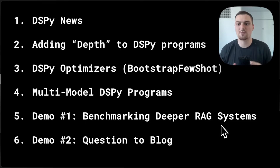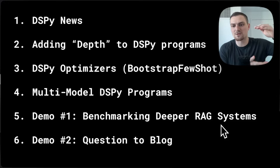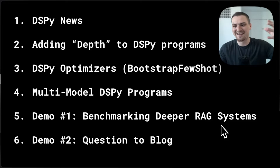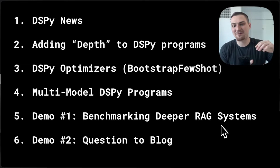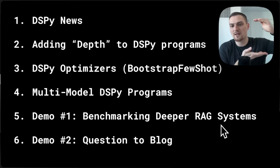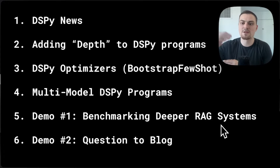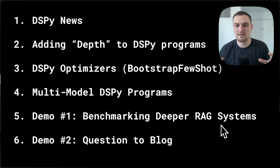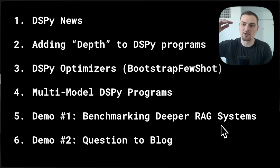With neural networks in PyTorch, we would stack up layers in order to optimize neural networks and get to where we are today with transformers. Back in the day, you would have say six layers of convolution, with pooling interwoven, then flatten and have three layers of convolution. With LLM programs, we similarly have this layer design in DSPy where we break a task up into subtasks, and each subtask is a layer in your program.